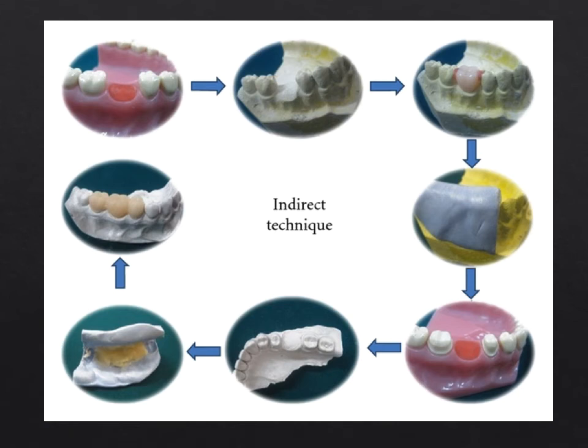This slide shows the indirect technique in fabrication of provisional restorations. First, a diagnostic cast is made. A diagnostic wax-up is done with the tooth in position. A putty index is made from the diagnostic wax-up. Auto-polymerizing resin is filled into the putty index and this index is stabilized on the prepared cast. The finished provisional is then trimmed, polished, and seated in the patient's mouth.